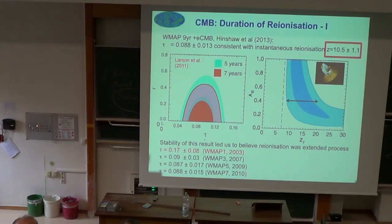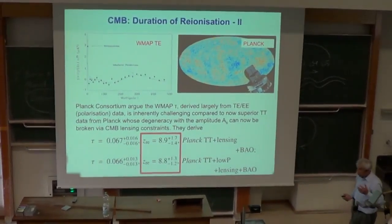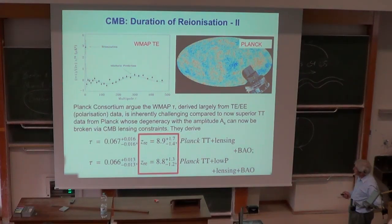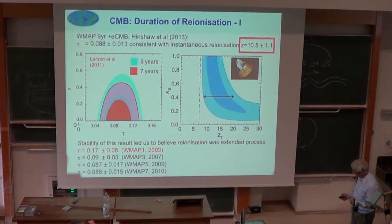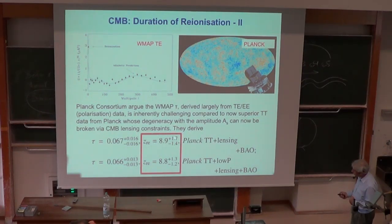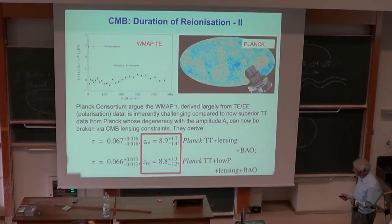But along came the Planck satellite with a different result. The Planck consortium argued the WMAP measurement was more challenging than appreciated, and derived an independent measurement giving an optical depth of 0.067 compared to WMAP's 0.088. Converting to a peak redshift, this comes down from 10.5 to 8.9. That may seem like a small change, but it has a very important effect on whether galaxies are responsible for re-ionization.